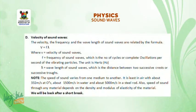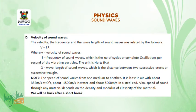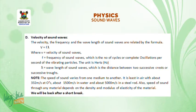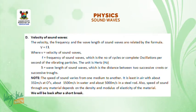Let's take the velocity of sound waves. The velocity, the frequency, and the wavelength of sound waves are related by the formula V = Fλ, where V is the velocity of sound waves, F is the frequency of sound waves, and lambda is the wavelength of sound waves.